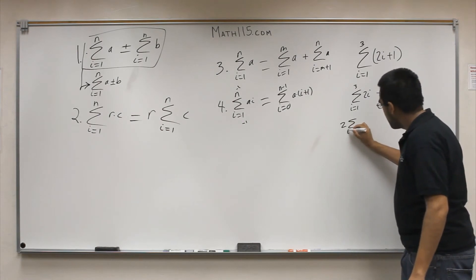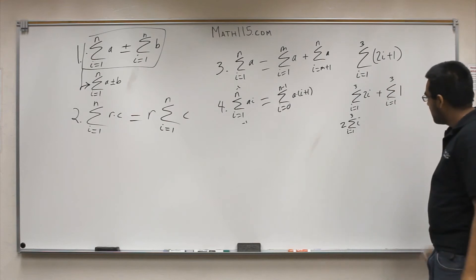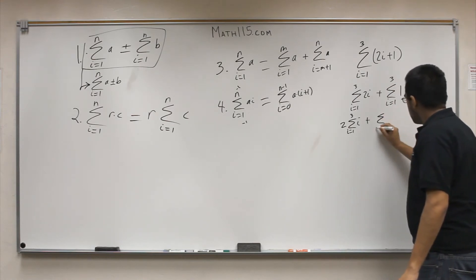i equals 1, same thing up top. Now there's just an i right there. And then we bring this down: i equals 1 to 3 with a 1.